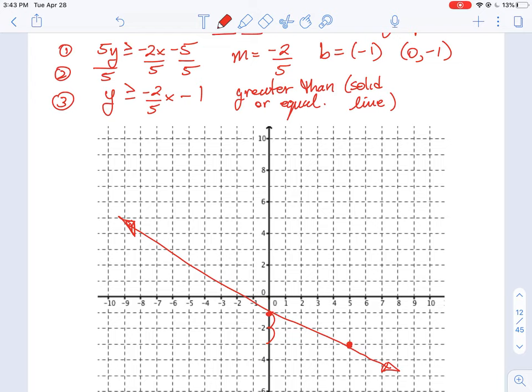So we're including all points on the boundary. And then where do we shade? Do we shade up or below? Well because we have y is greater than, that's implying that we are going to be shading all points above the line.